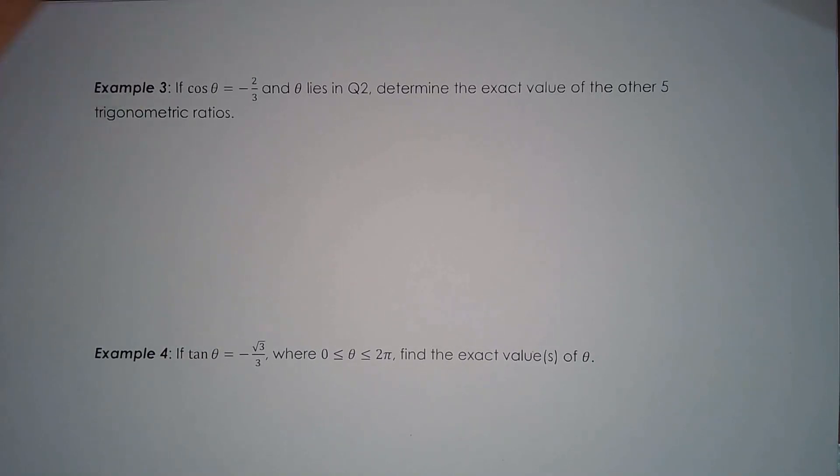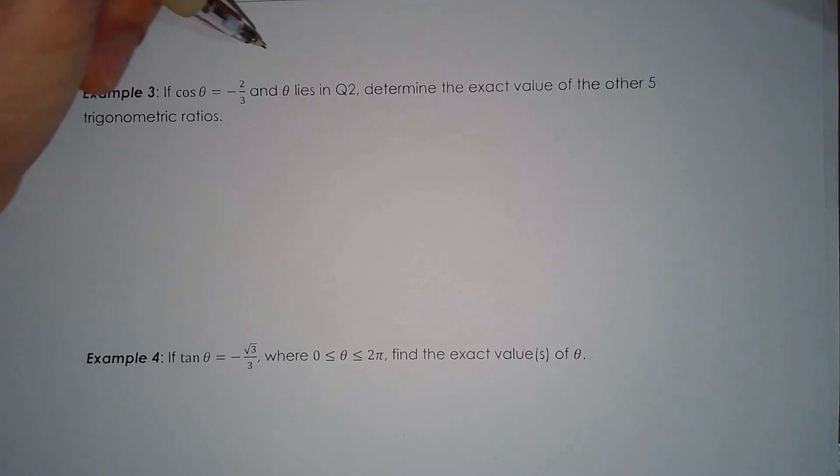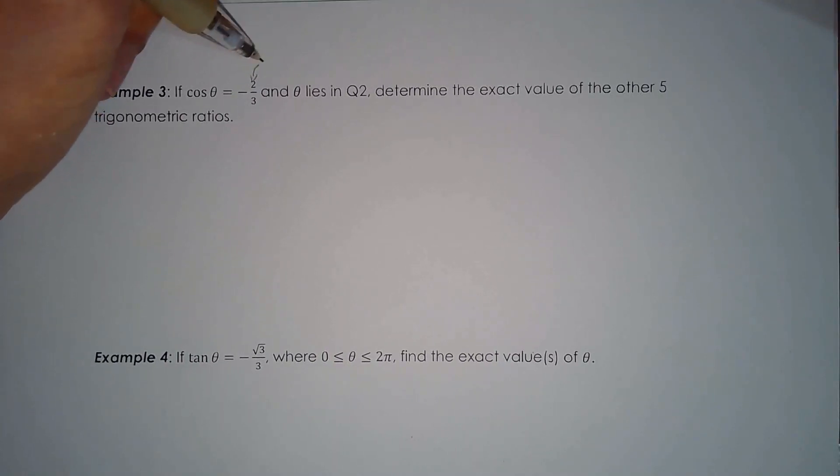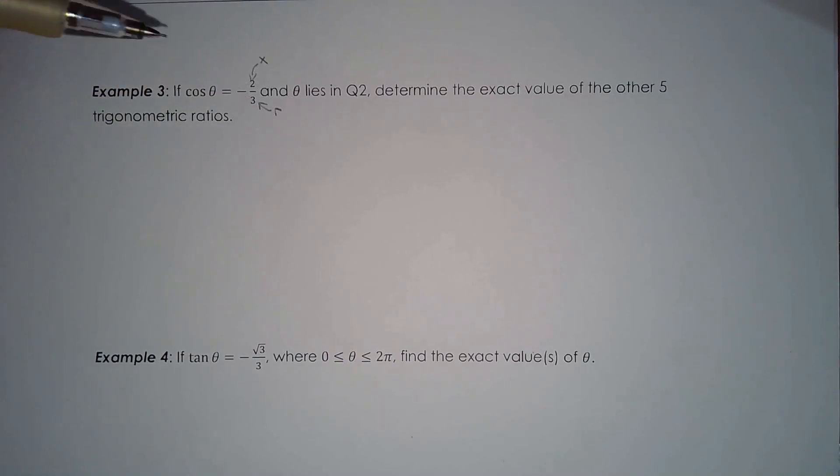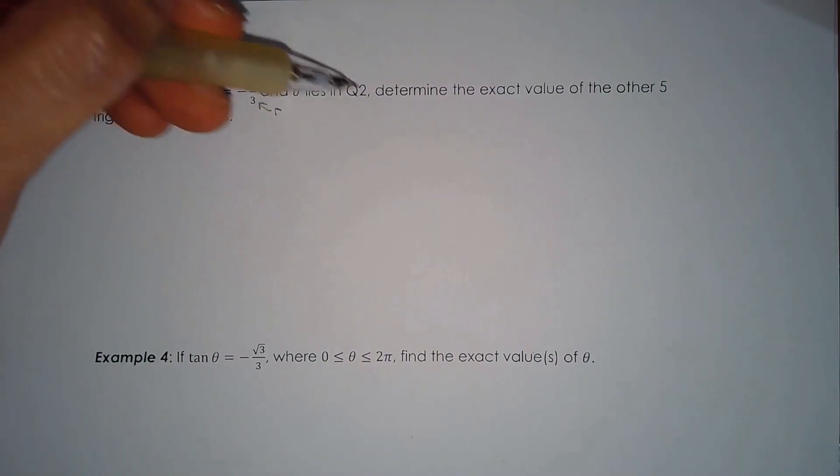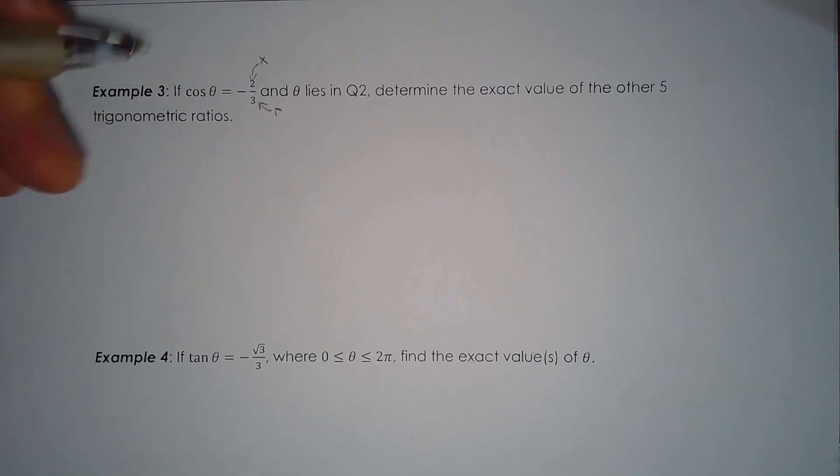So what you need to remember is cos theta is defined as x over r. So you have x and you have r. So x must be negative 2 because the radius of the circle cannot be negative. And it makes sense that x is negative because we say that theta lies in quadrant 2. So what we're missing here is y. We have x, we have r, but we don't have y.